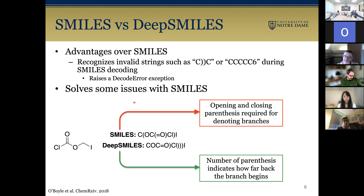Deep SMILES solves some issues with SMILES strings — it can recognize invalid strings, such as a double closing parentheses string, or a string that does not have an atom six positions before it closes the ring. However, not all issues are solved. For example, SMILES uses open and closing parentheses to denote molecular branching, and deep SMILES only shows the closing parentheses.